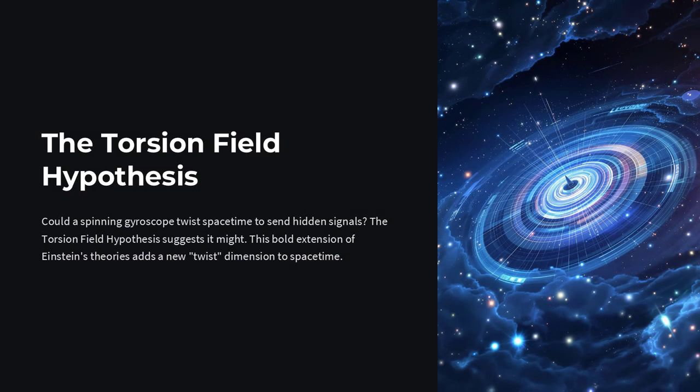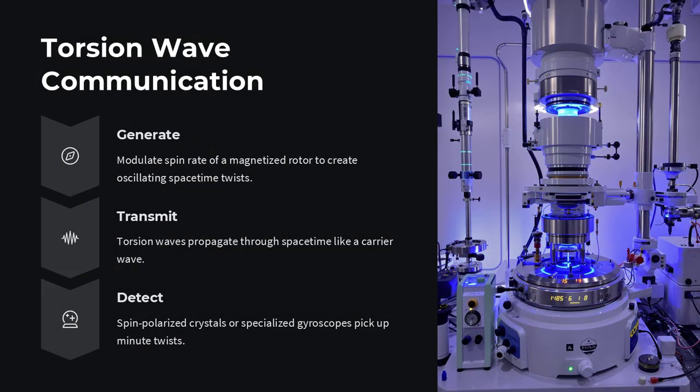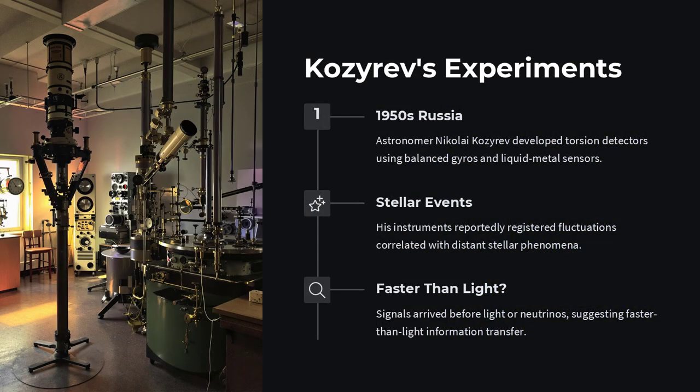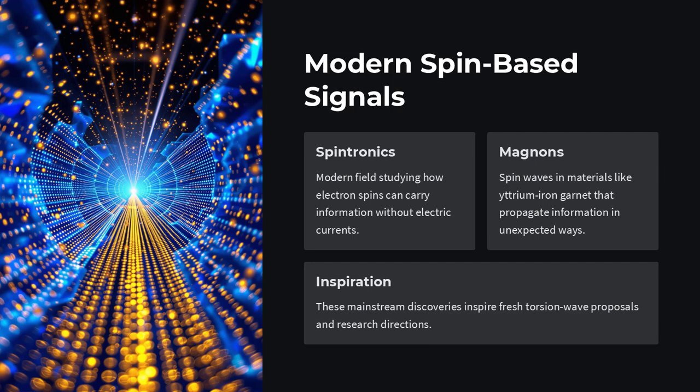Imagine you're holding a precision gyroscope and wonder if its constant spin could do more than prevent it from toppling. Could it actually twist the very fabric of space-time to send hidden signals? That's the bold claim of the torsion field hypothesis, an extension of Einstein's curved space picture that adds a new twist dimension.